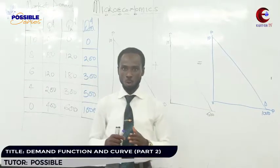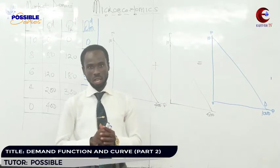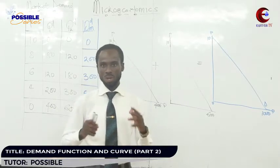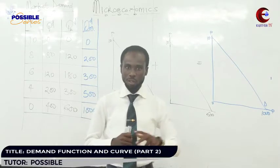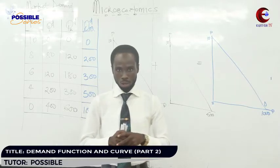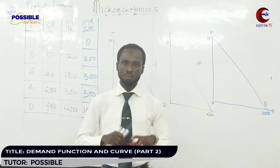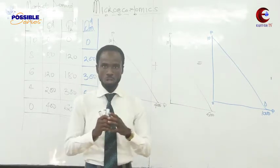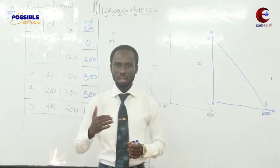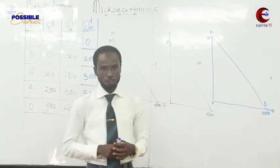My name is Possible and I'll be your teacher for today. In our previous lecture we ended with individual demand curves. We said we have two types of demand: individual demand, which is about what only one consumer will be consuming, and market demand, which is for a group of consumers. Market demand is the aggregate of what consumers will be consuming.